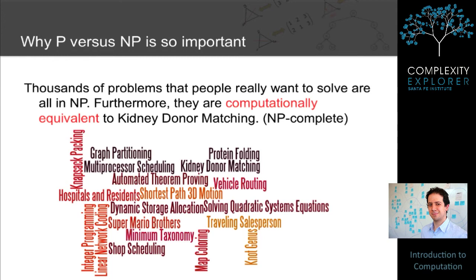P versus NP is so important because thousands of problems that people really want to solve are all in NP — which shouldn't be too surprising, since it means they can all be solved by brute force. The interesting fact discovered in the 1970s is that all of these thousands of problems are computationally equivalent to kidney donor matching. They're not just in NP — they're NP-complete, meaning significant progress on any one of them leads to significant progress on all of them. There are easily findable lists of thousands of NP-complete problems, some of dire importance and some frivolous fun.